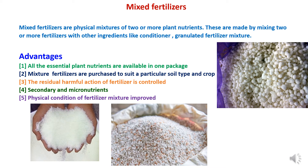The first advantage is that all essential plant nutrients are available in one package, making it easier to apply in the field rather than applying various components separately — the farmer is saved from the trouble of purchasing, transporting, storing, and applying various fertilizer materials separately. The second advantage is that mixed fertilizers are purchased to suit a particular soil type and crop for higher yield, and mistakes in mixing wrong quantities and types are eliminated since the fertilizers are ready-made.